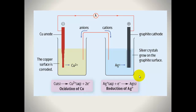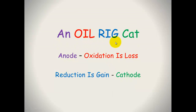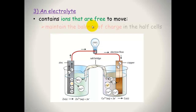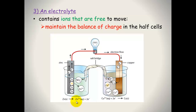The way to remember this is: OIL RIG CAT — anode: oxidation is loss; reduction is gain, occurs at the cathode. The electrolyte is the solution the electrodes sit in. It contains ions that are free to move, and it's important because it maintains the balance of charge in the half cells. For example, when zinc solid forms Zn²⁺ ions, positive ions build up in solution, so negative ions from the salt bridge migrate in to balance that charge.